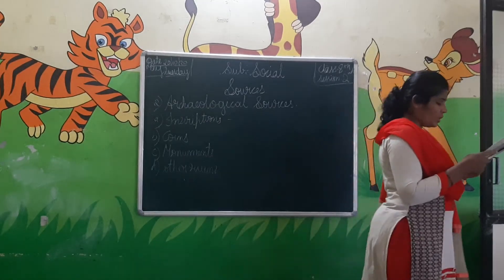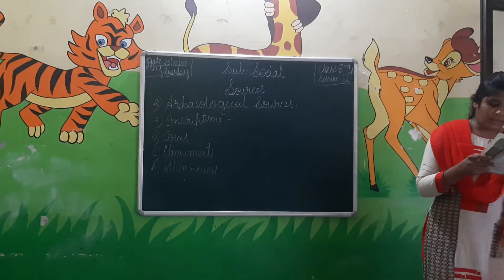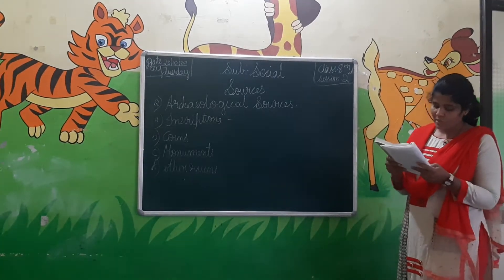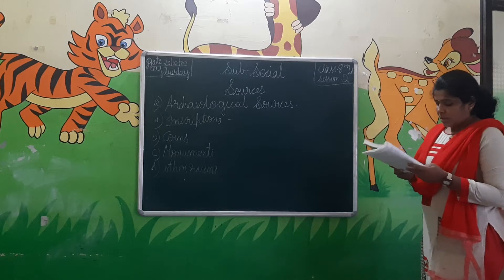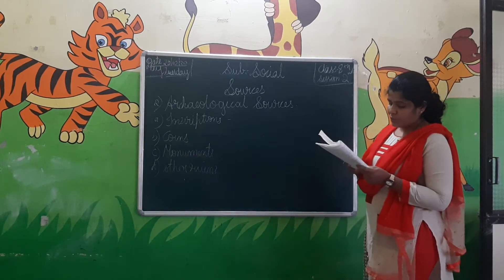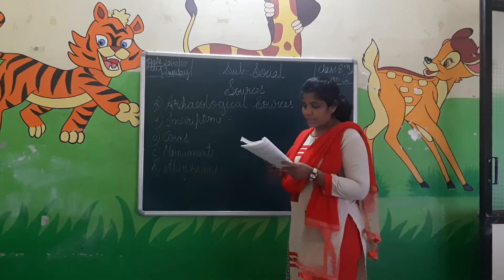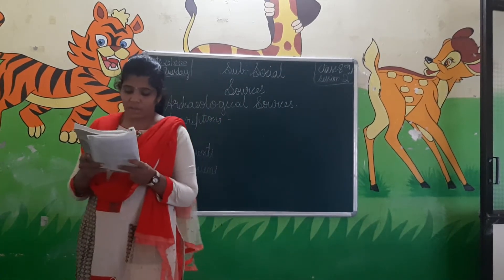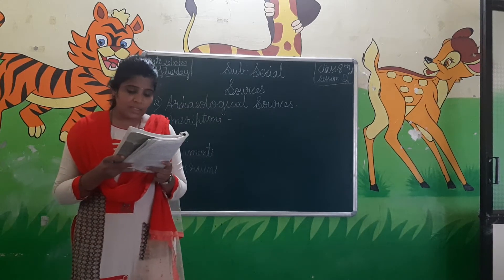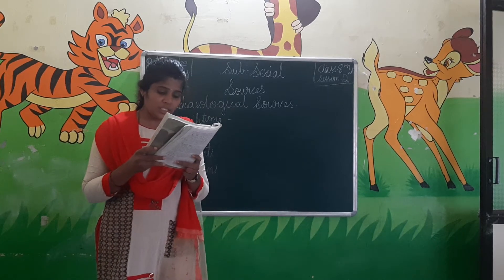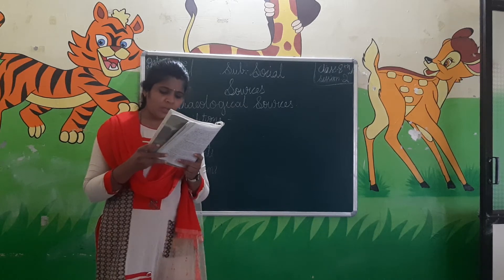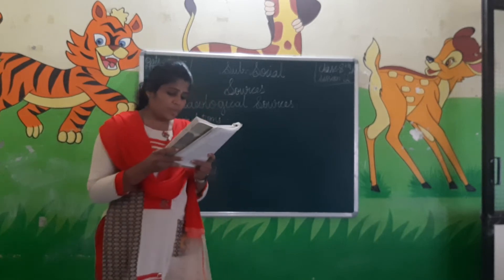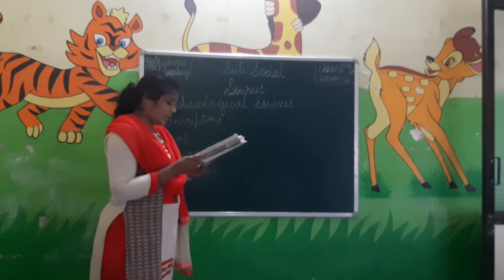Thousands of inscriptions are found in Kannada, Hindi, Tamil, Sanskrit, and Prakrit languages. Samudragupta's Allahabad pillar inscription and Imadhi Pulakeshi's inscriptions are important examples. Parevellu's Hathigumpha inscription is also notable. These and other inscriptions portray the military achievements of those rulers.